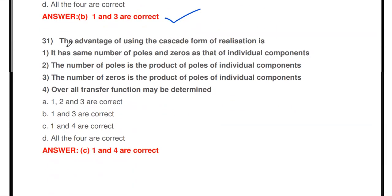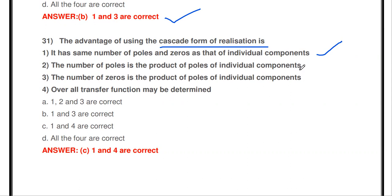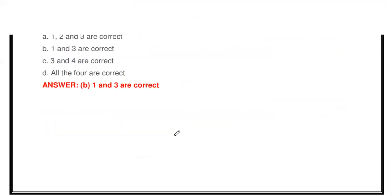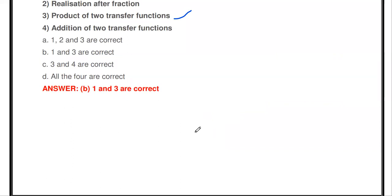The advantages of using cascade form realization: it has the same number of poles and zeros as that of the individual components, and the overall transfer function may be determined by multiplying H1 and H2 together. Options 1 and 4 are correct. These are some of the questions about the analog Butterworth filter and Chebyshev filter.